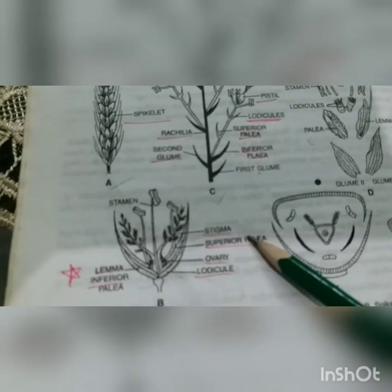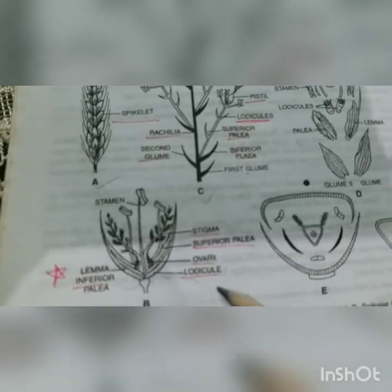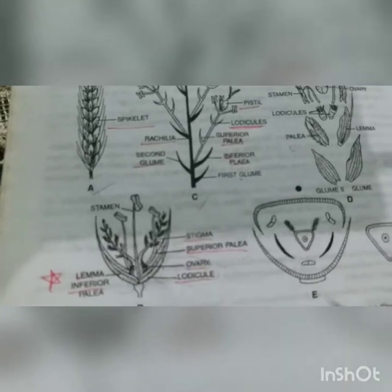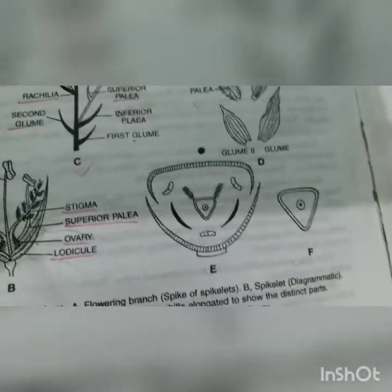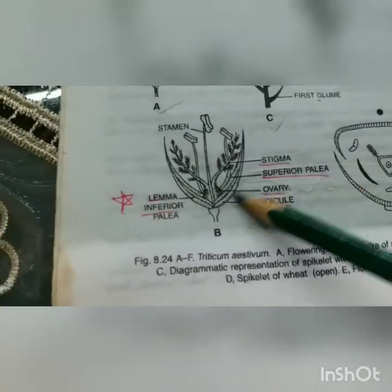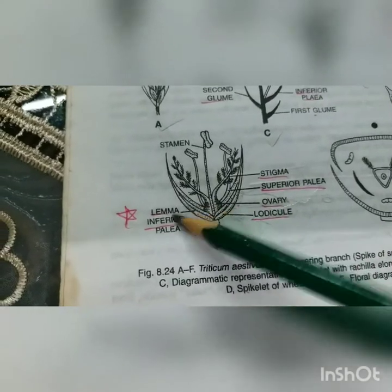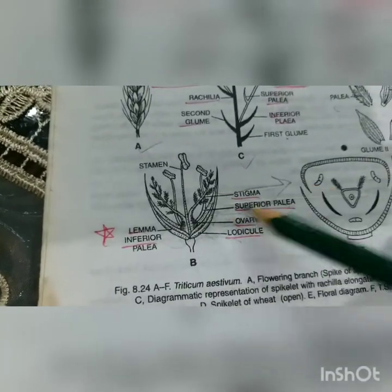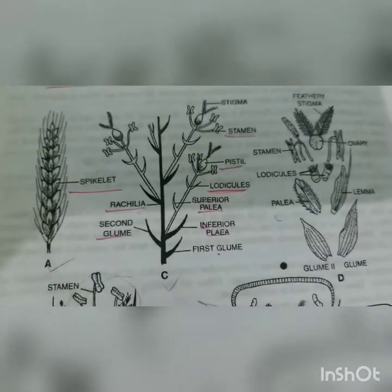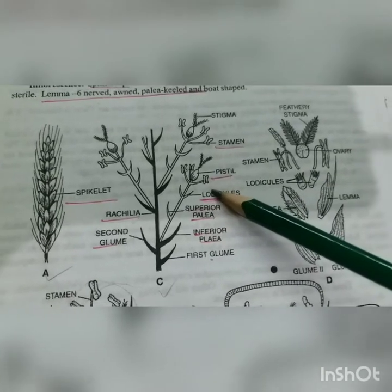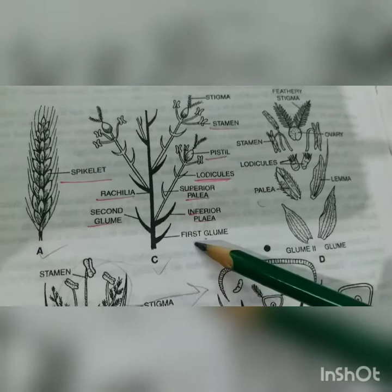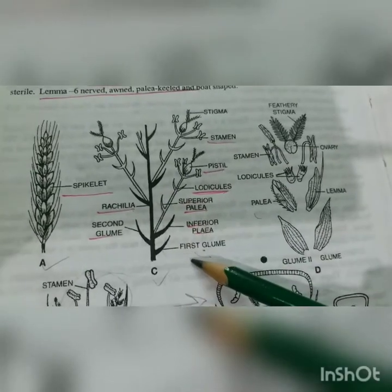These lodicules are opposite to the paleas and they are hygroscopic - they absorb moisture and force apart the palea and glumes, exposing the essential organs. This is the spike of spikelets. There are superior and inferior paleas. The structure includes glumes - first glume and second glume - then palea and lemma. The lemma is six-nerved and the palea is keeled and boat-shaped.